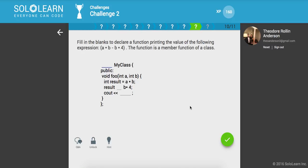So finally fill in the blanks to declare a function printing the value of the following expression, A times B minus B times four. So here we have int A times B. And it's going to be result, which is going to be result. It's going to be equal to minus equal. And then let's go ahead and print result. Make sure I got that right. Okay. Cool.